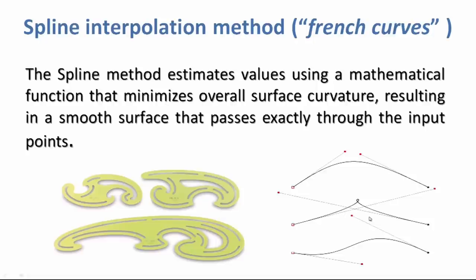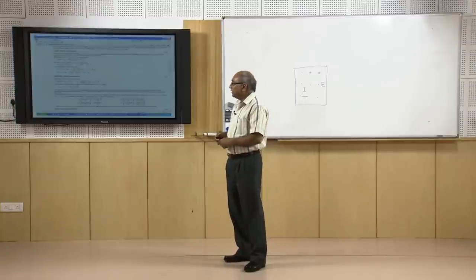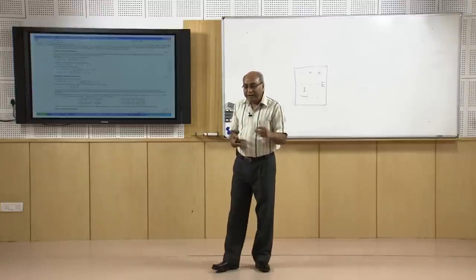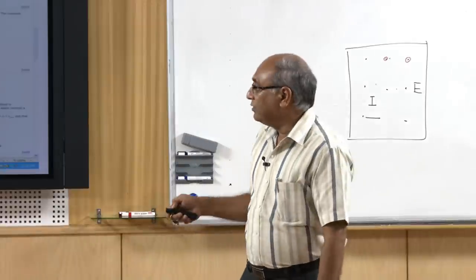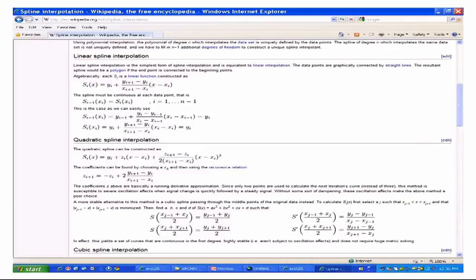There are different options available in your GIS software for Spline. As mentioned, there are variants of the Spline method: linear Spline, quadratic Spline, and cubic Spline interpolators, with the mathematics behind each also provided.